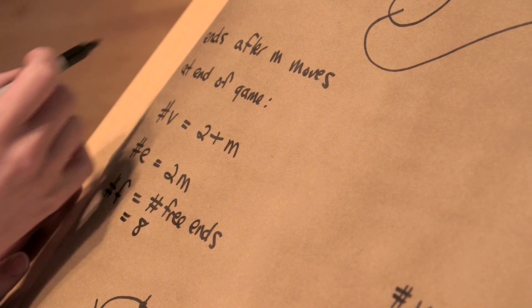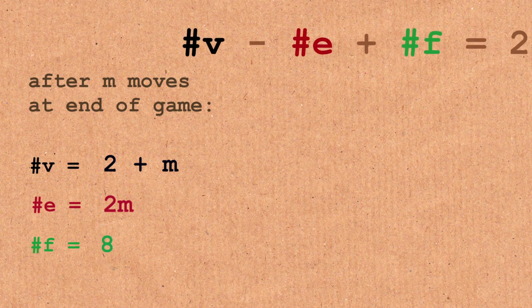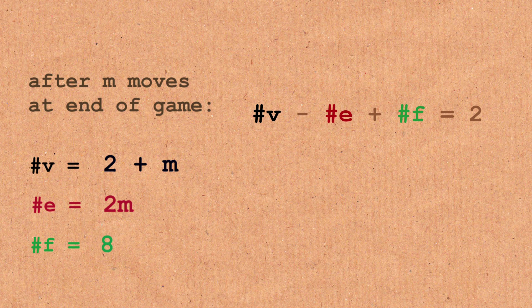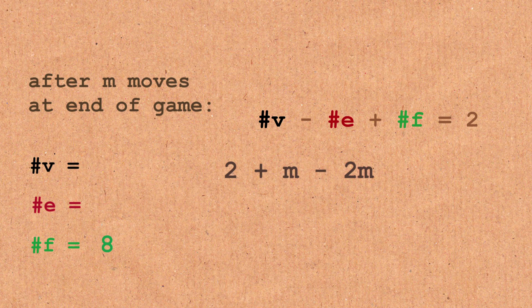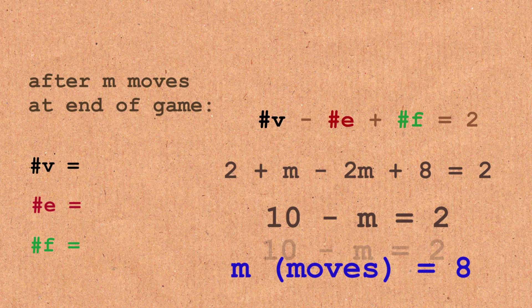Okay, so let's do the Euler characteristic. So I'm supposed to do the number of vertices minus the number of edges plus the number of faces. Two plus M is the number of vertices minus the number of edges. Plus we had eight faces and it has to be equal to two. Euler told us that. So what do I have? I have ten minus M is equal to two. The number of moves is eight. We just showed that player two always wins.